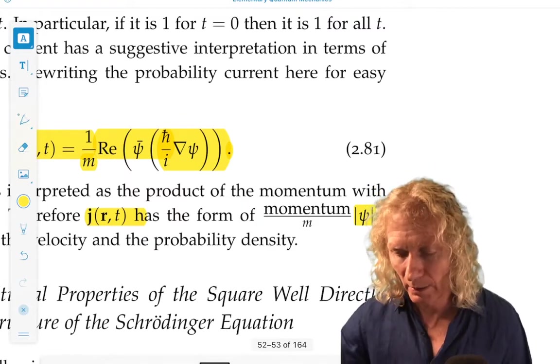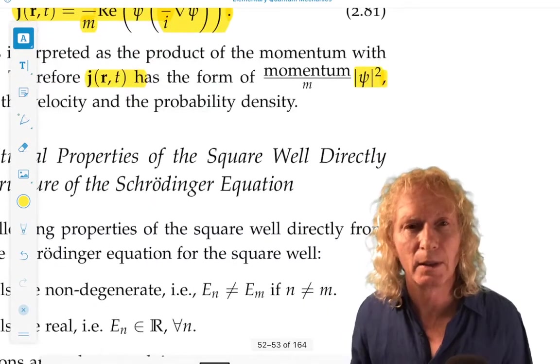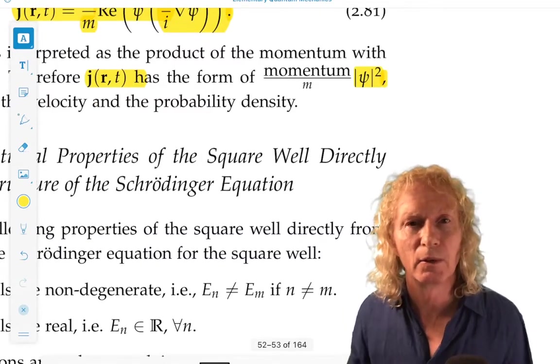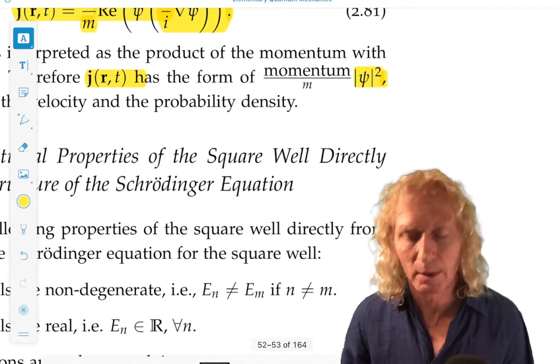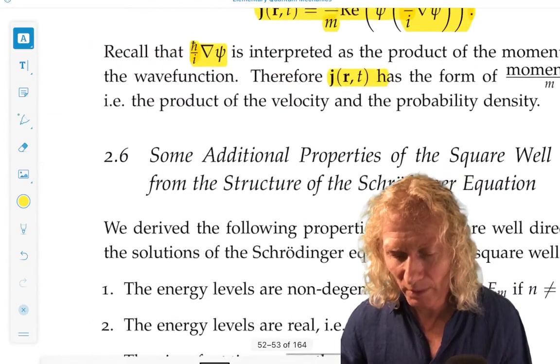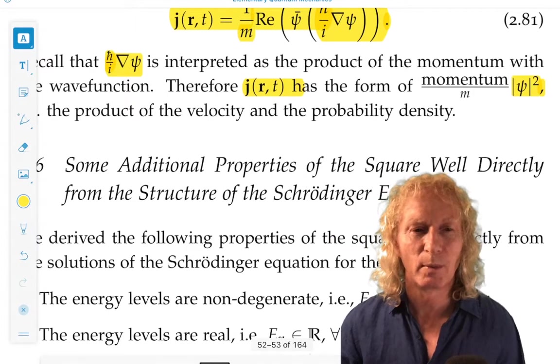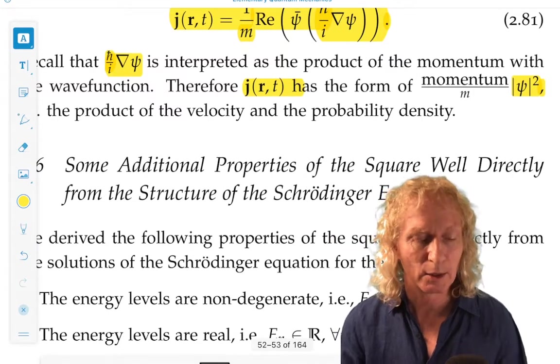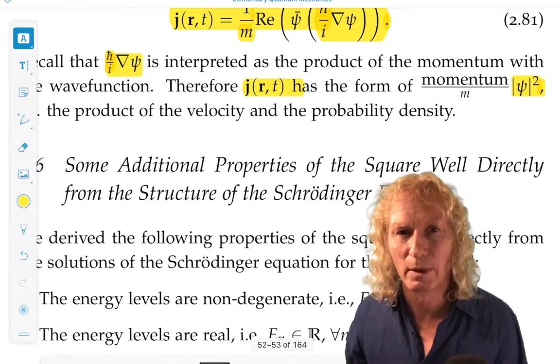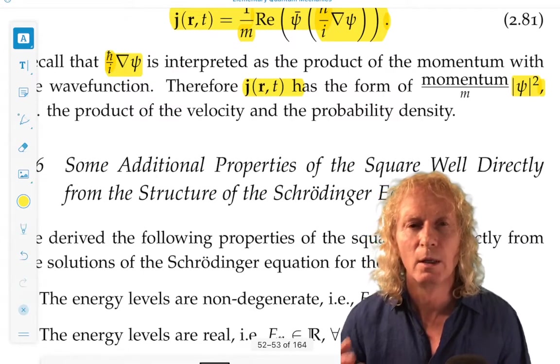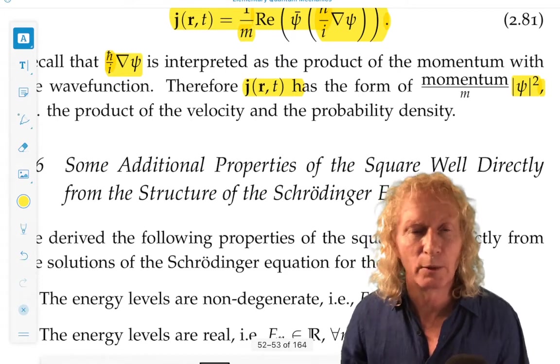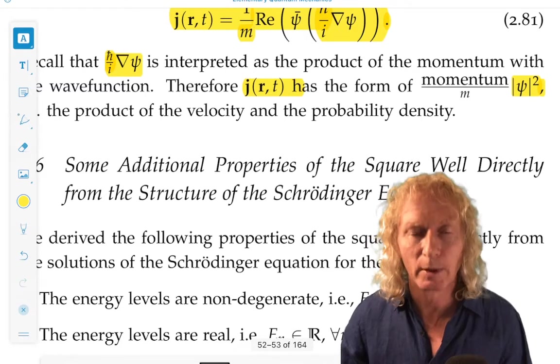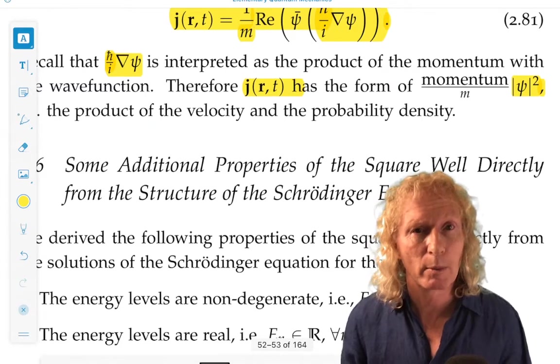So, that would tell us that the probability density is advected in space by this velocity. So, we see, I mean, this may seem a little abstract and kind of curious and maybe not that useful at the moment. The most useful facts we have are the probability density and the form of that equation. And we're going to use that when we look at scattering problems shortly.